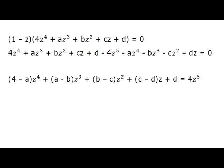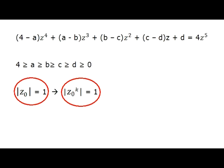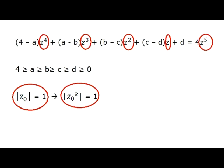Let's write the new equation in the standard polynomial form, and move the term with the highest degree to the right side. Now the idea of this transformation begins to reveal itself. First, we notice that all the coefficients of this polynomial are real non-negative numbers. If the magnitude of z₀ is 1, then the magnitude of any power of z₀ is also 1.